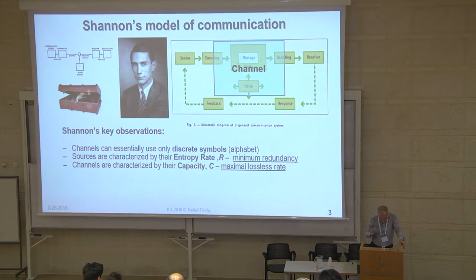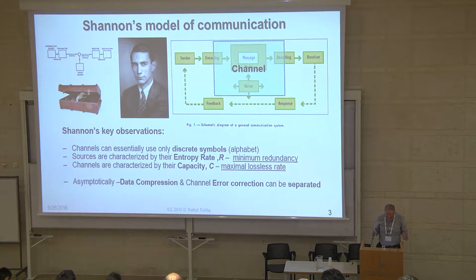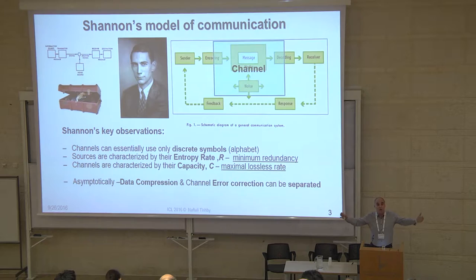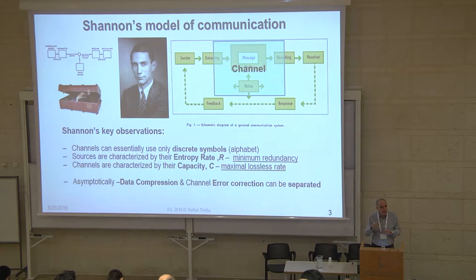This trick of separating source coding from channel coding didn't come for free. It has a cost: this separation property works only asymptotically. You need very long blocks, introducing very long delays, to achieve optimal compression and error correction. This made information theory non-instantaneous, which made it somewhat awkward for control people thinking about differential equations and things that change quickly in time. Many people thought: information theory is not for me — it's only asymptotic.